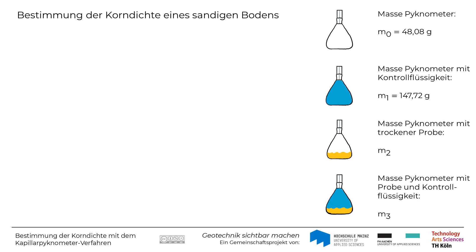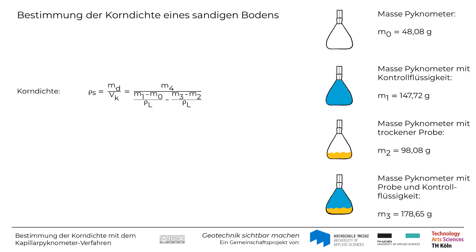Nach Einfüllen der Probe in das Pygnometer wird die Masse M2 von Pygnometer und Probe zu 98,08 g ermittelt. Nach Zugabe der Kontrollflüssigkeit und Temperierung des Pygnometers wird die Masse M3 gleich 178,65 g ermittelt. Nun sind alle notwendigen Messungen erfolgt und die Korndichte Rho-S kann mit der aufgeführten Formel ermittelt werden.